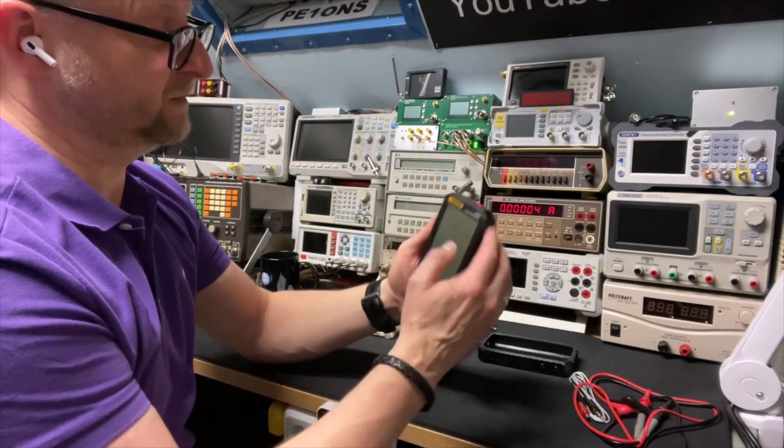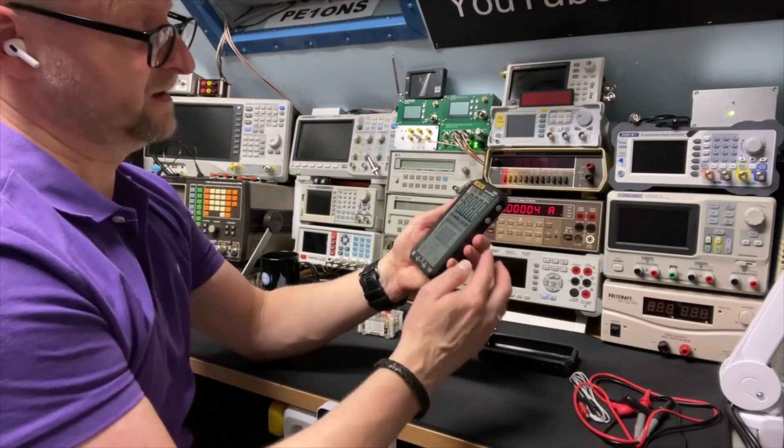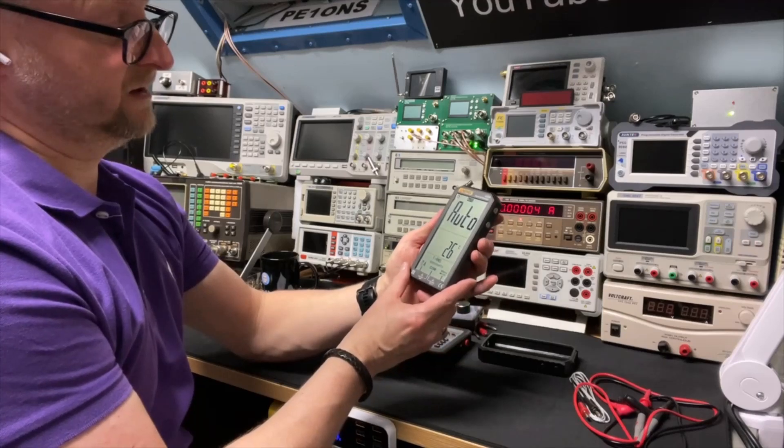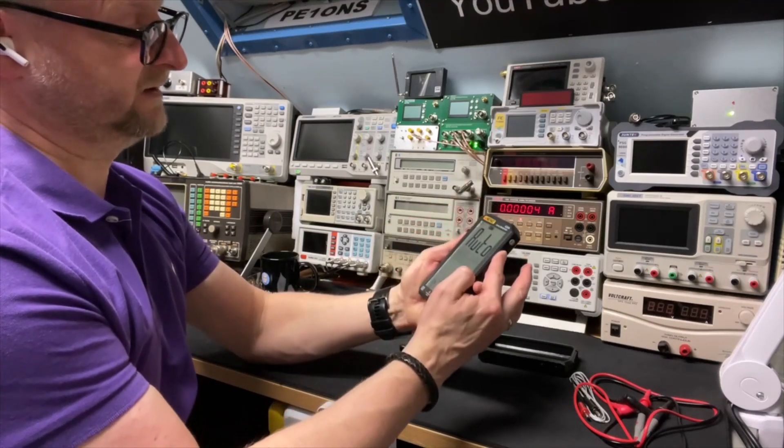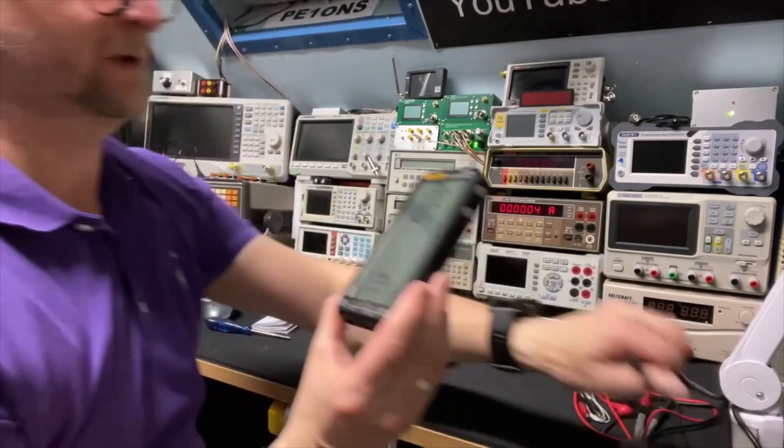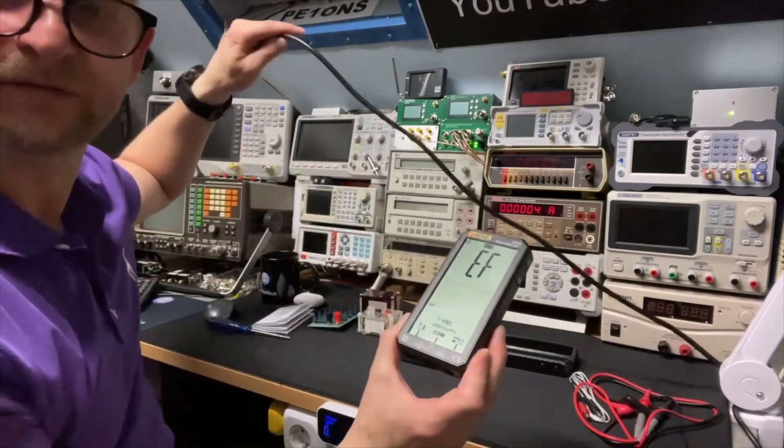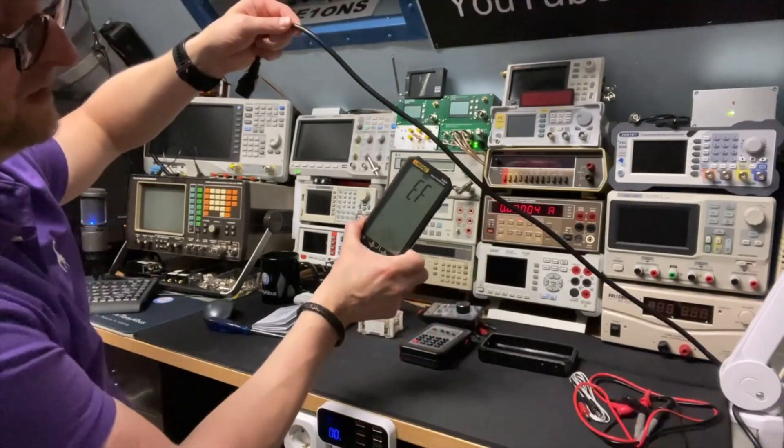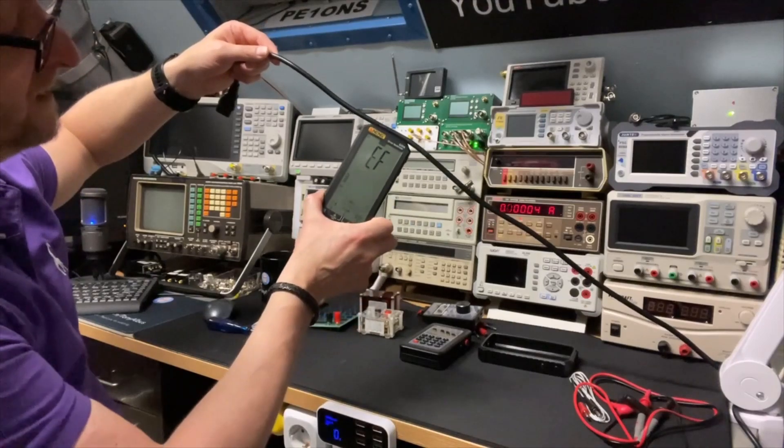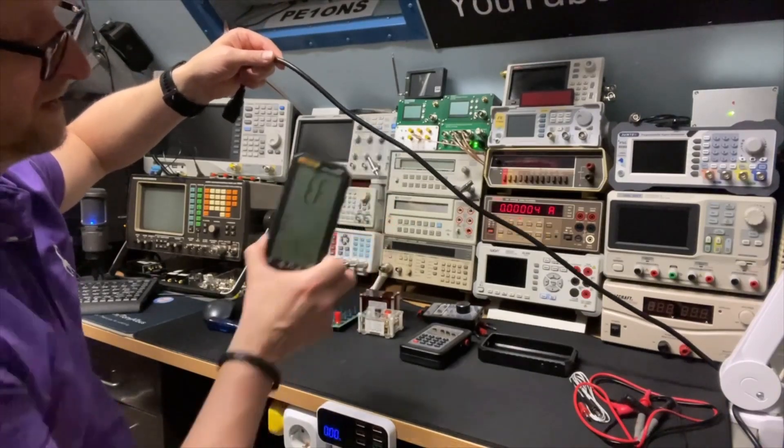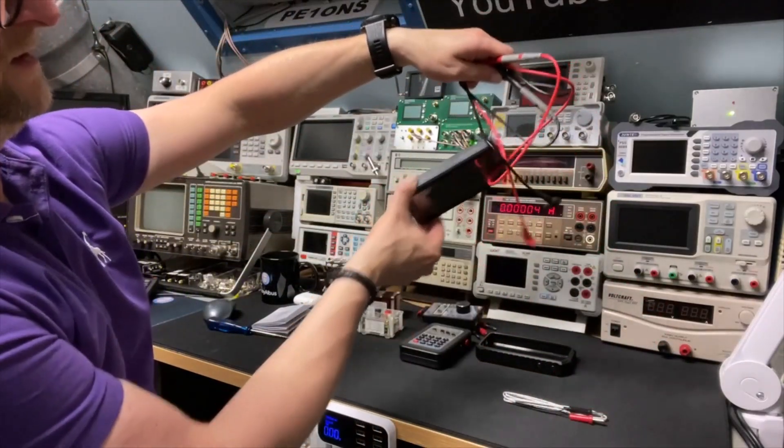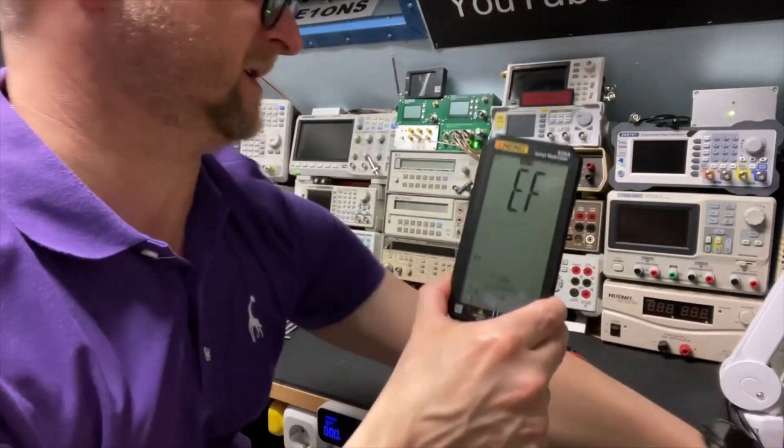Let me switch it on, it is a long push. Now it says EF, I don't know what that means, but now it is in non-contact voltage mode. It's making noise, and that's correct because this cable is plugged in. So that's nice, that works actually quite good.